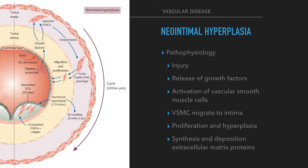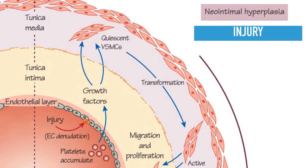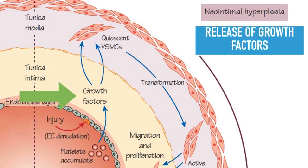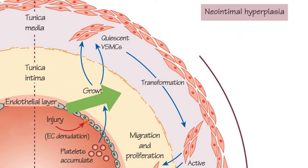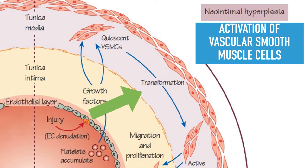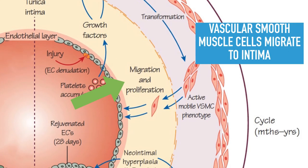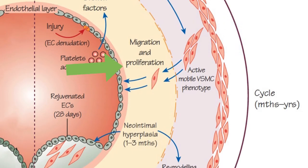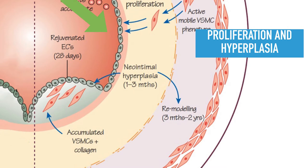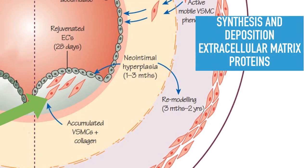Regarding pathophysiology: after injury occurs, growth factors are released, which in turn activate the normally quiescent vascular smooth muscle cells in the media. Activated vascular smooth muscle cells then change phenotype to their mobile and proliferative type and migrate to the intimal layer, where they undergo proliferation and hyperplasia. The result is synthesis and deposition of extracellular matrix proteins.